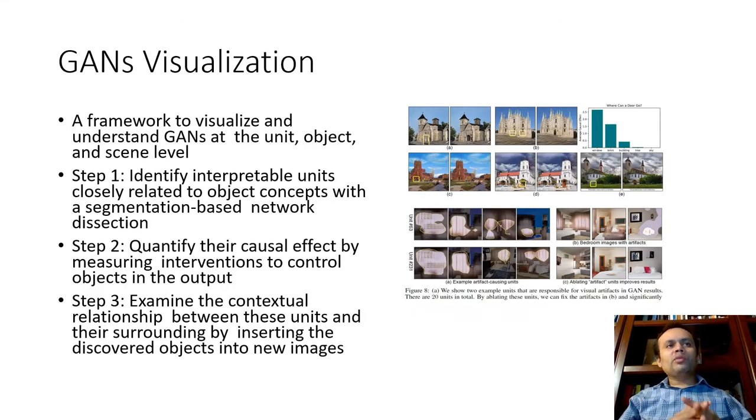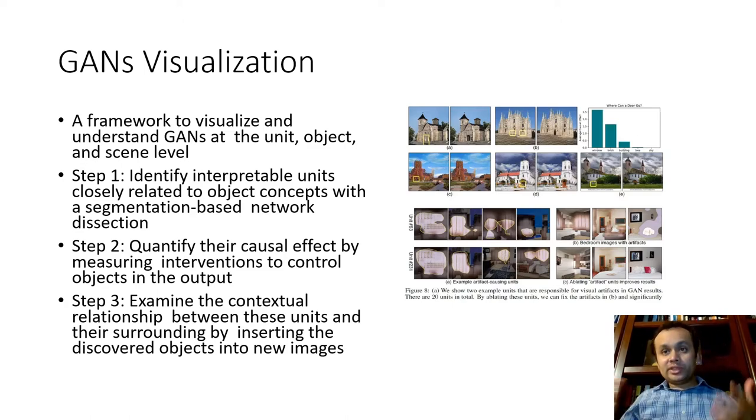So we will focus on one such technique for GAN visualization. So we consider a framework to do that. So the idea is to identify interpretable units in the form of segment-based network dissection. So we identify certain segments which may correspond to, let's say, object concepts. And we can actually quantify their causal effect by, let's say, we do certain interventions to control the outputs in the object. And we can examine that by observing their contextual relationships between these units and then overlaying these and then trying to make sense out of these, quote-unquote, discovered objects with these new images.